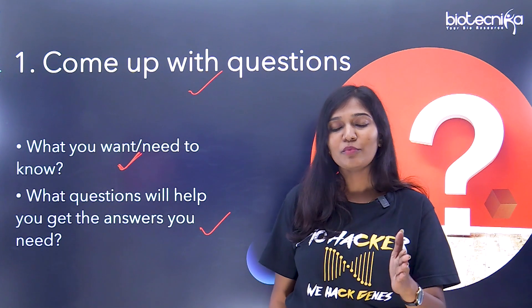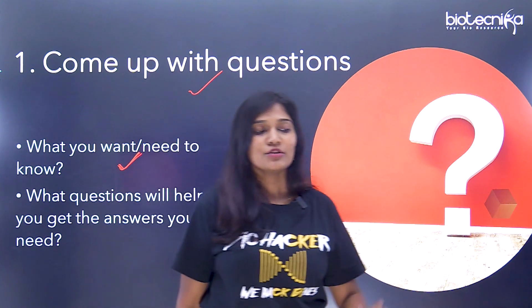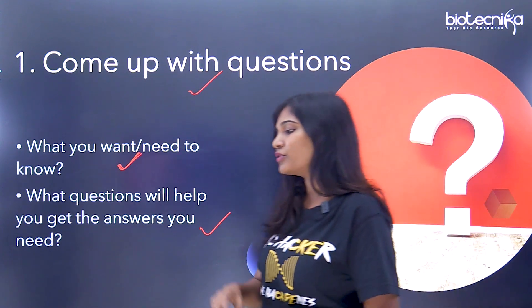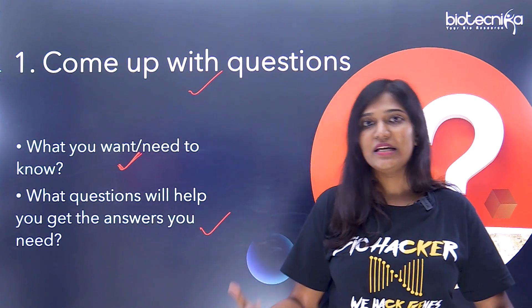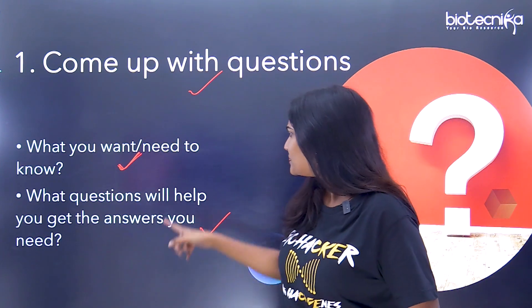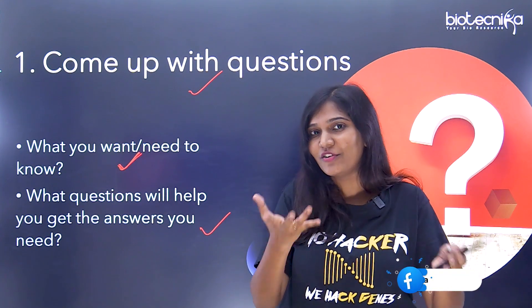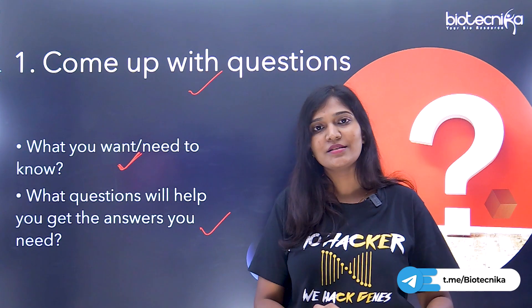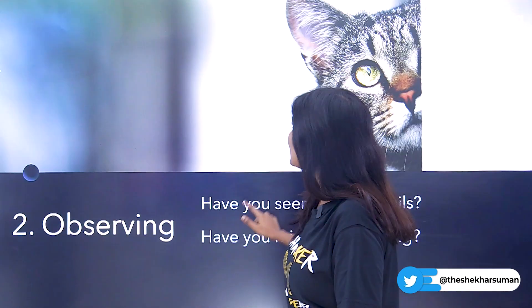The next important thing is: what question will help you get the answers you need? Suppose if you want to find a drug for a specific disease, you need to figure out what question will get you that answer — such as what drugs are used for a specific cancer, malaria, tuberculosis, and so on. So the first research skill checklist is coming up with a question or questions.